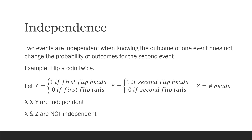If we let z be the total number of heads in the two flips, then x and z are not independent. Before the first flip, z can be 0, 1, or 2. But once we flip the first coin, if x equals 1, then z can't take the value 0 anymore. If x is 0, then z can't equal 2. So x and z are dependent. Similarly, y and z would also be dependent.